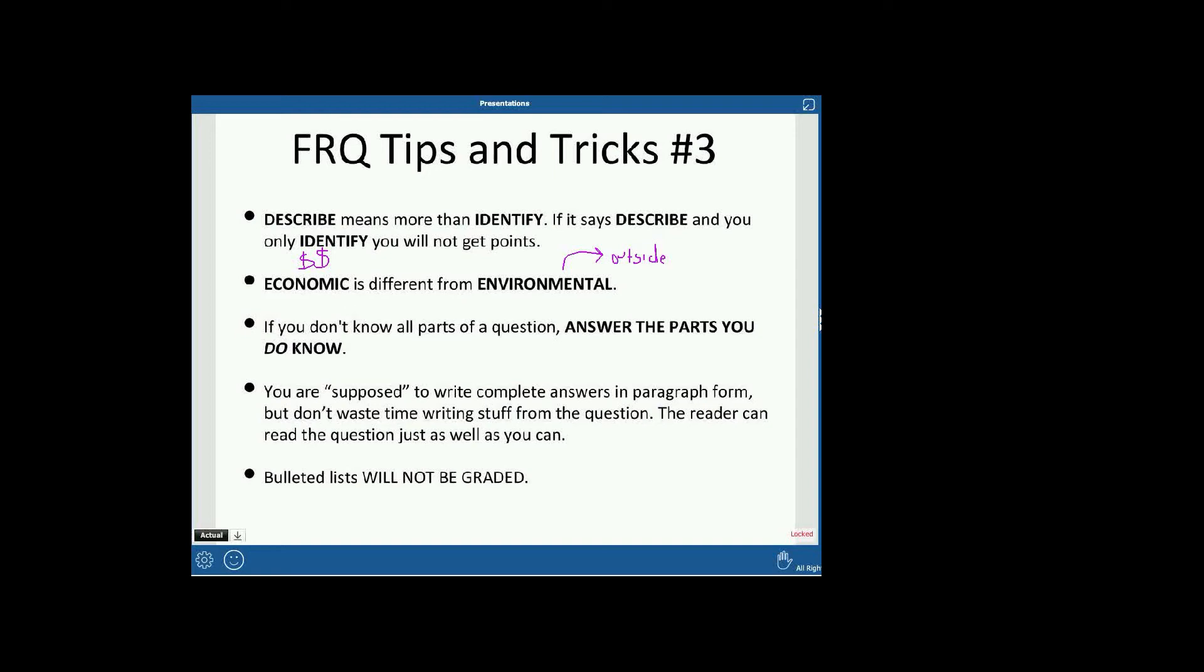If they say describe two things and you describe three, they're only going to read the first two. If the first one is really bad and it's not a good answer, they're not going to go on to that third one. They only grade the first two and it's like the third one doesn't even exist. They are instructed not to read the third thing that you write. So don't waste time writing it. If they ask you for two things, just write two things.